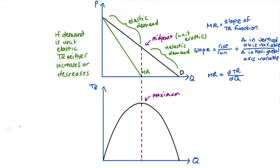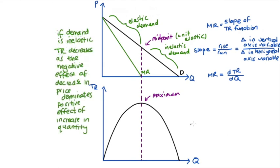At the point of unit elasticity, the proportionate change in quantity is exactly equal to the proportionate change in price, so the positive effect of the increase in quantity is exactly offset by the negative effect of the decrease in price — total revenue remains unchanged. In the inelastic section, the proportionate change in quantity is less than the proportionate change in price, so the positive effect of the quantity increase is dominated by the negative effect of the price decrease, and total revenue decreases. I do hope the video helped — please like and subscribe, and I've listed some videos below that go into more detail on some of the topics we've covered.